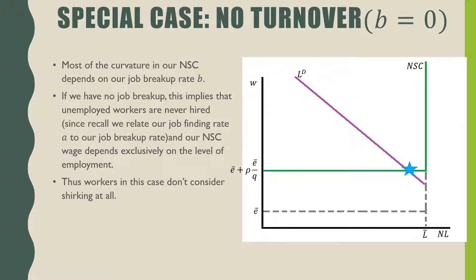Let's talk about a special case where there is no job turnover, or when B is equal to zero. It's clear from this diagram that most of our curvature from our no shirking condition depends on whether or not we have B in our equation. If we don't have any B, this implies that our unemployed workers are never hired.